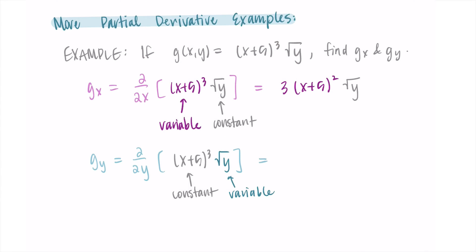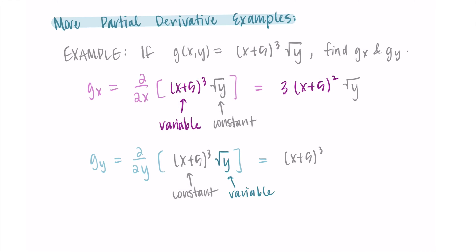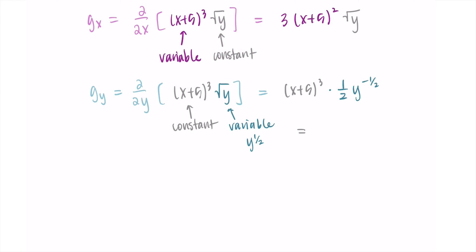When we take the derivative, we leave that x plus 5 cubed alone — it's just a constant. Then we take the derivative of the square root of y. I'll think of this as y to the one-half, so the one-half comes down and the power decreases to negative one-half. Simplifying, this is x plus 5 cubed over the square root of y, moving the negative exponent to the denominator. That's it for that one.